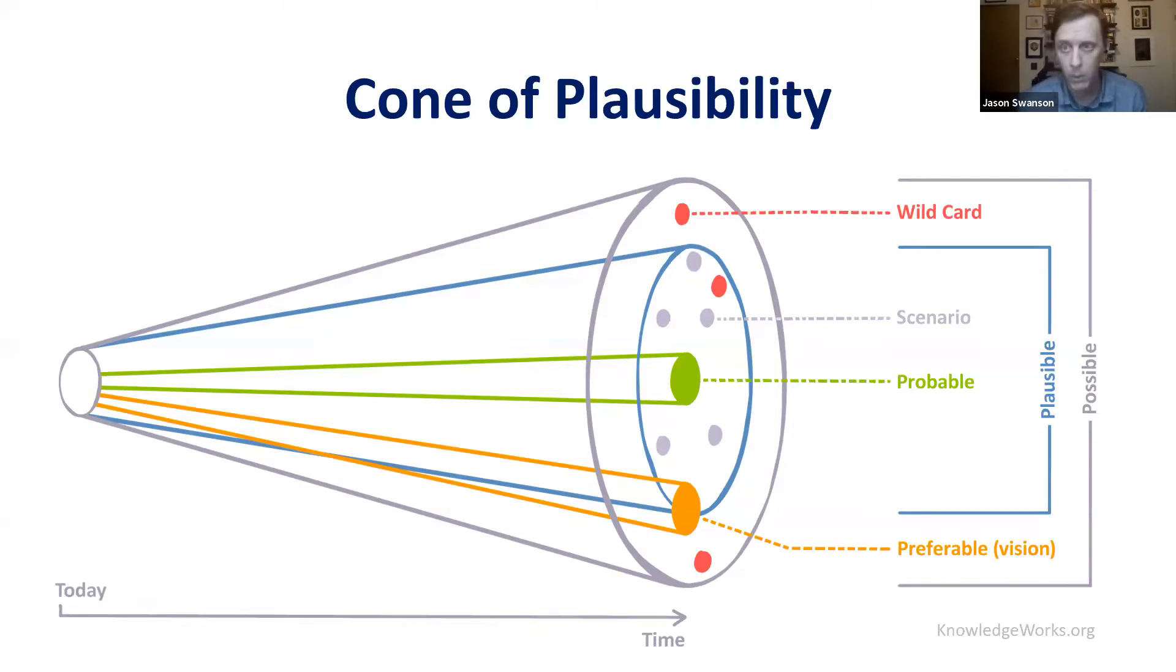They're signaling to the world what we want from the future, similar to the question I asked you to recall when we opened this up. They're really acting as a North Star. As we navigate change, how are we going to adapt our plans and design new offerings to bring us closer to those visionary futures?